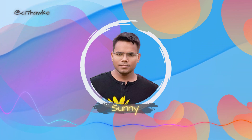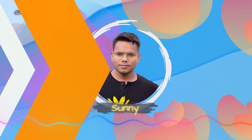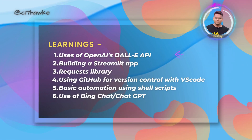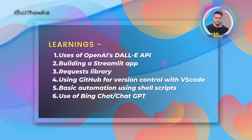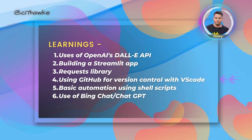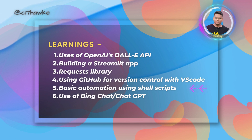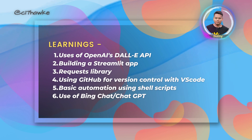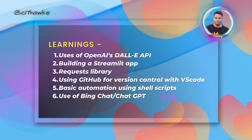Let me tell you the various skills you will gain in this project. First is OpenAI APIs — you will see its use case. Second is building a Streamlit app. Third is making requests using the requests library. Fourth is using GitHub for version control with VS Code. Fifth is some basic automation using shell scripts, which you will see at the beginning of the project itself. And to help you quickly get started with the boilerplate, we will also be utilizing Bing Chat.